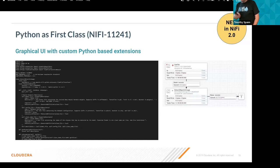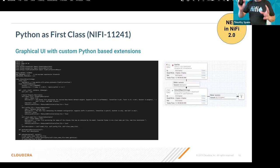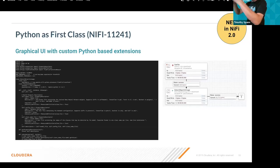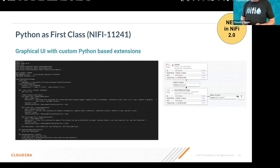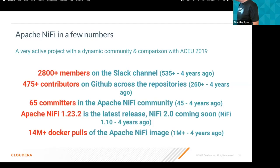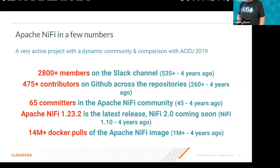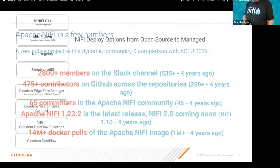The big roadmap item is native Python processor support. You write your Python, you have access to all the NiFi internals, and when deployed it looks like a regular NiFi component with all the queuing and multi-cluster deployment features. NiFi handles the pip dependencies and encapsulates everything safely, similar to how NARs already isolate Java components.